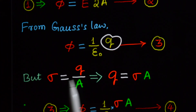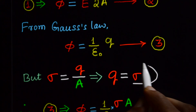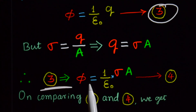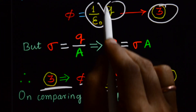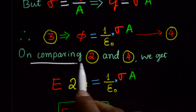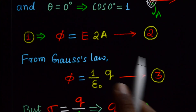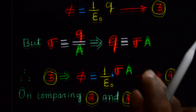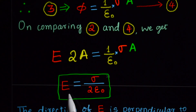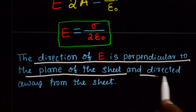Now express the charge enclosed. Surface charge density sigma equals Q divided by A, which implies Q equals sigma times A. Substituting Q equals sigma times A, equation 3 becomes: flux equals 1 by epsilon naught times sigma into A — that is equation 4. Now comparing equation 2 — flux equals E into 2A — and equation 4 — flux equals 1 by epsilon naught times sigma into A — we get: E into 2A equals 1 by epsilon naught times sigma into A. Cancelling A on both sides, E equals sigma divided by 2 epsilon naught. The direction of electric field is perpendicular to the plane of the sheet and directed away from the sheet.